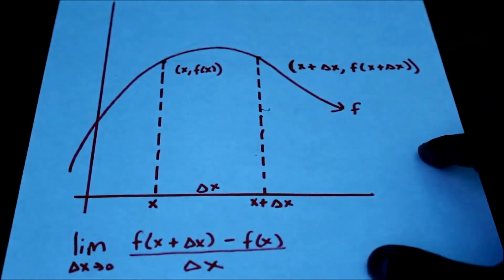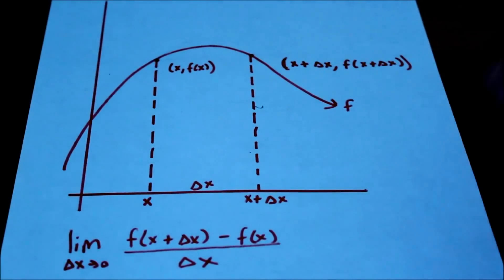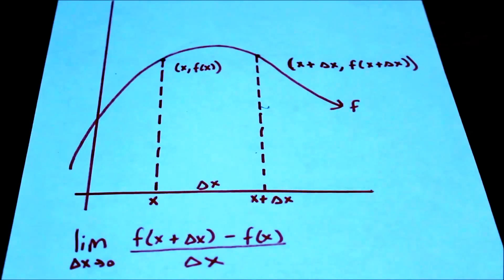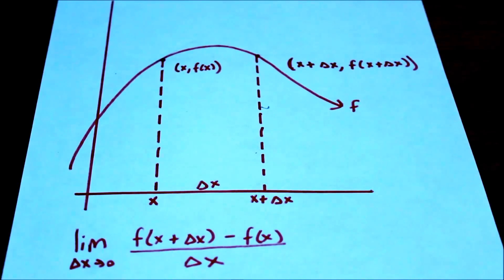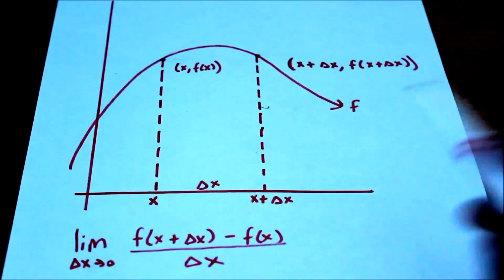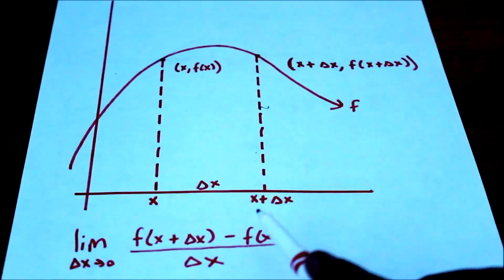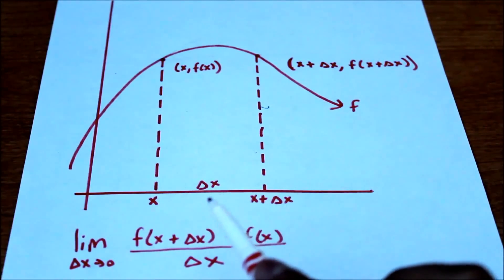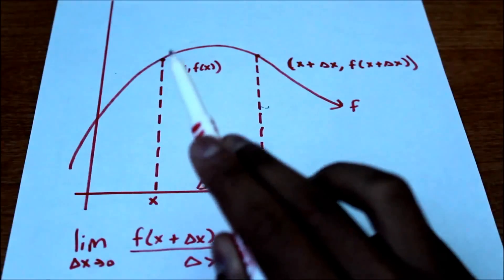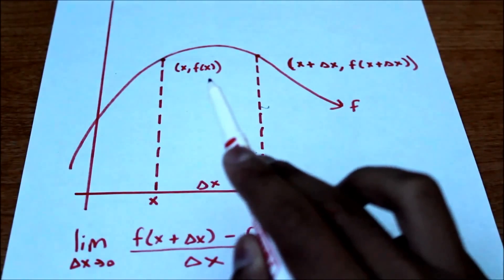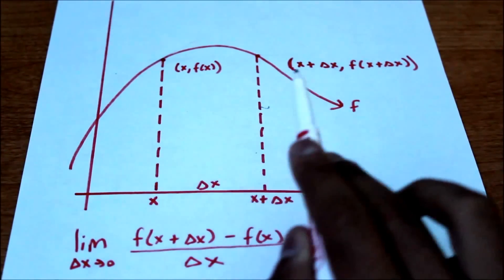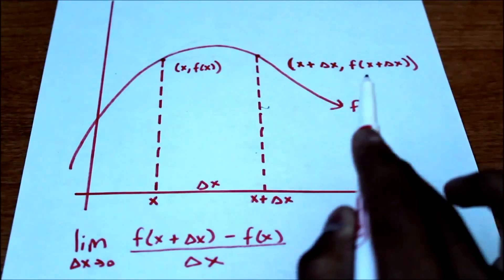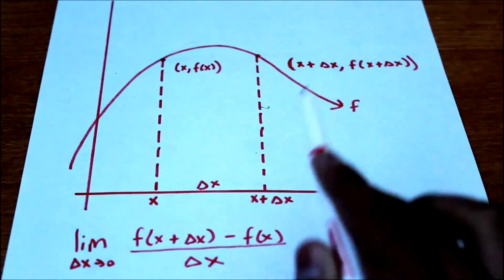Here we have some function f. We have this curve and two points: x and x plus delta x, with the distance between them being delta x. The two points on the curve are x comma f of x, and x plus delta x comma f of x plus delta x.